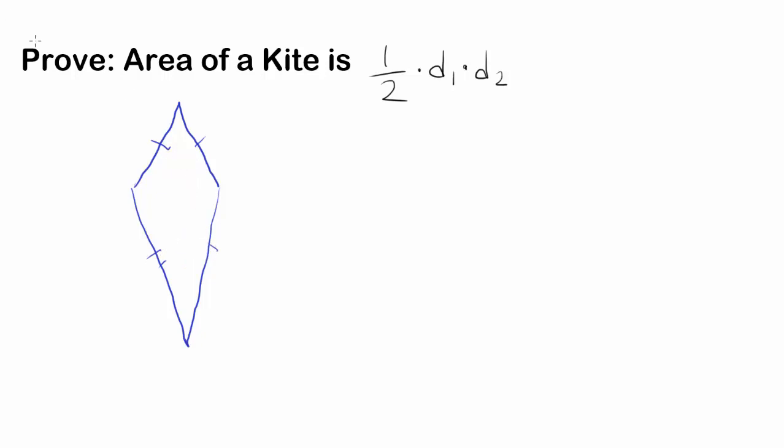And for a kite, we know the diagonals are perpendicular. Maybe I'm going to prove that fact in another video, but let's say we have proven it to begin with.